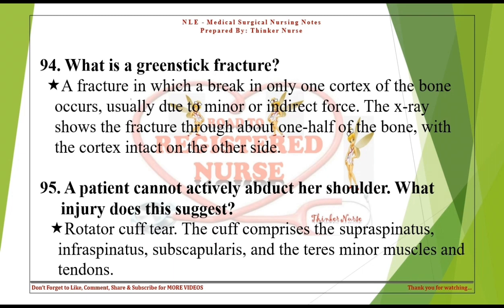A patient cannot actively abduct her shoulder. What injury does this suggest? Rotator cuff tear. The cuff comprises the supraspinatus, infraspinatus, subscapularis, and the teres minor muscles and tendons.